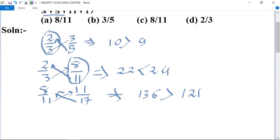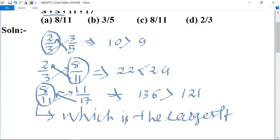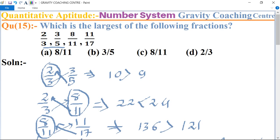So 8 upon 11 is which is the largest fraction. So option A is the largest fraction option. So option A is the correct answer.